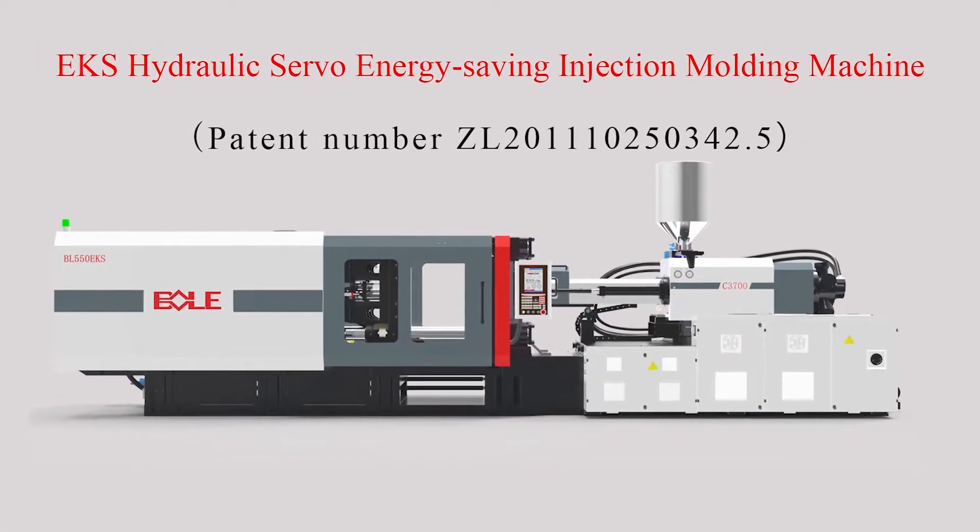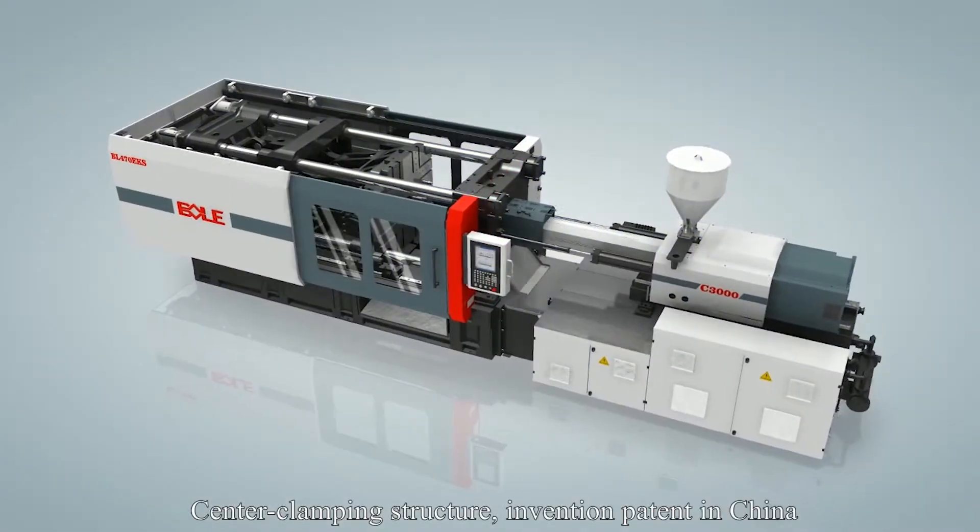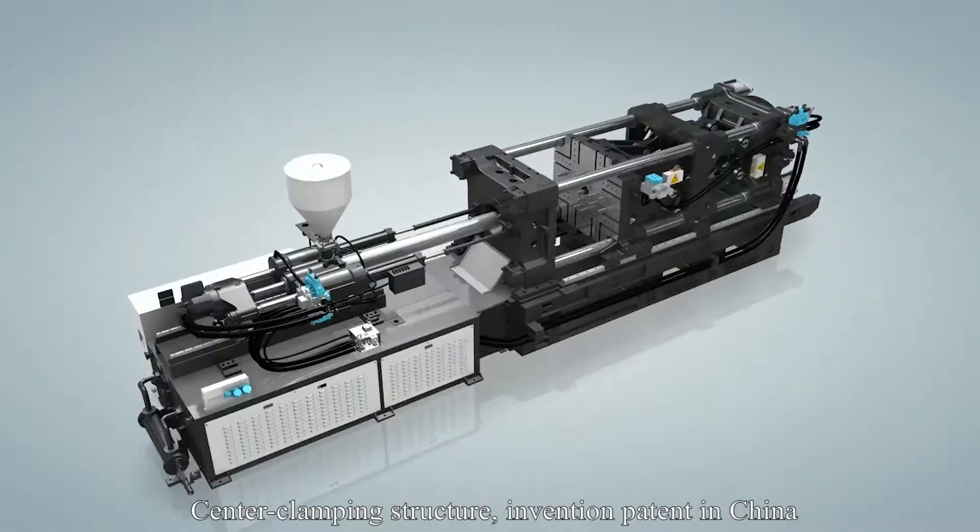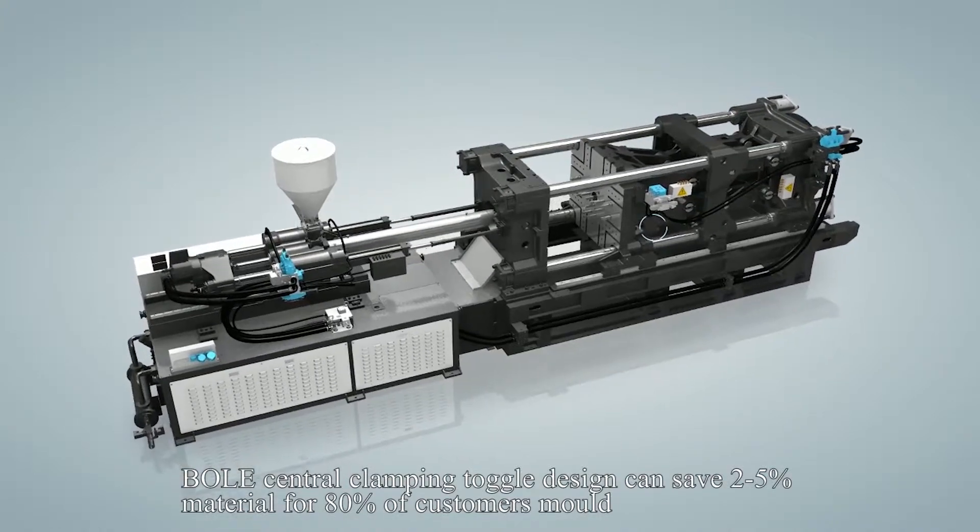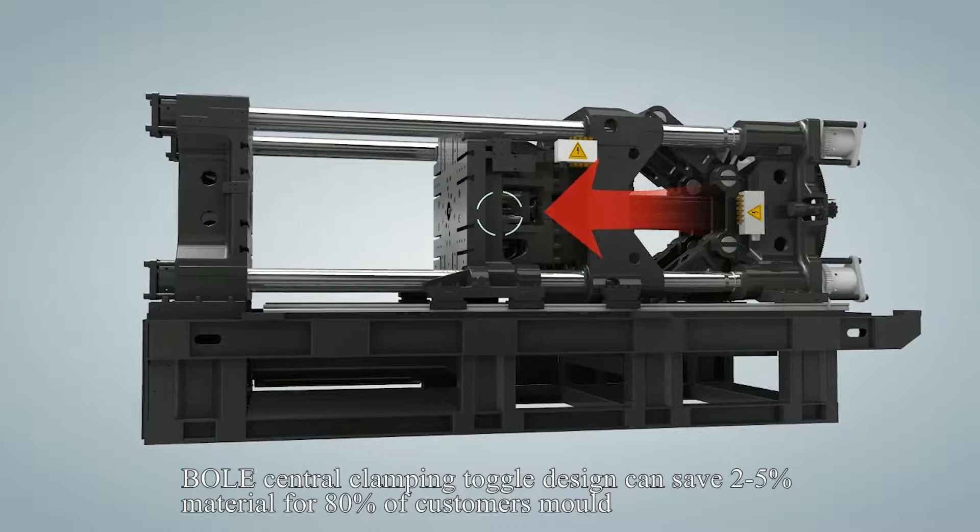EKS Injection Molding Machine Series Hydraulic Serial Energy Saving Central Climbing Structure. Invention Patent in China: the Central Climbing Chicago Design can save 2-5% material for 80% of customers.